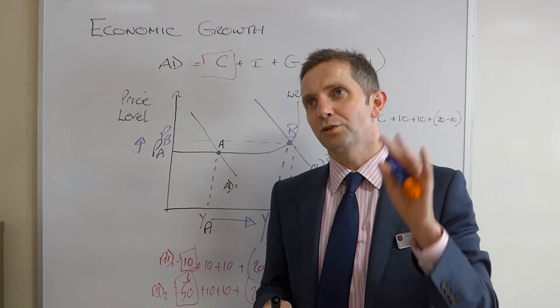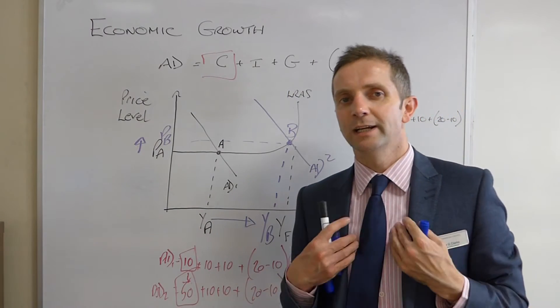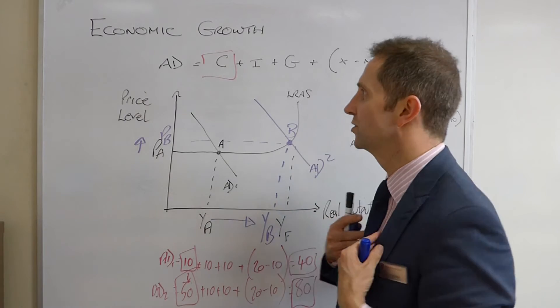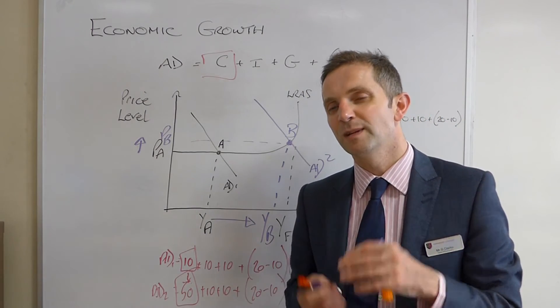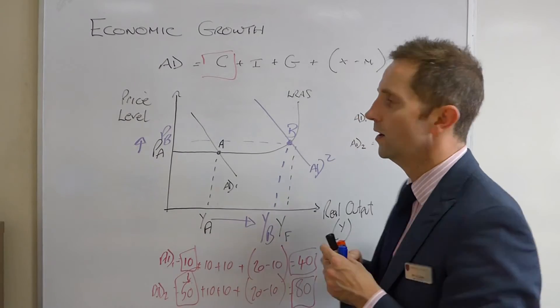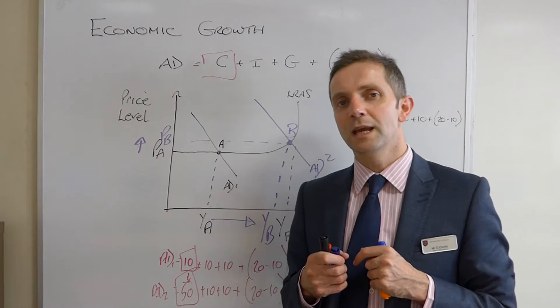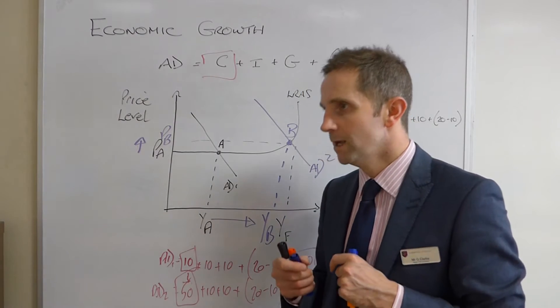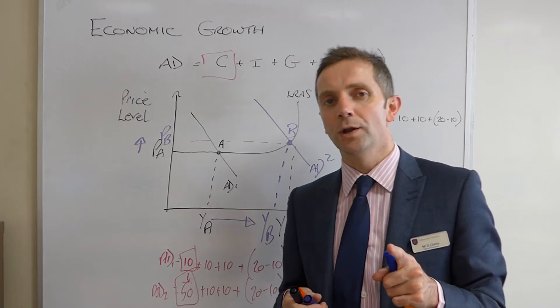So, consumption, expenditure by firms on consumer goods and services in order to bring the consumer a certain amount of satisfaction. So, let's think about some things the government could do to maybe stimulate consumption. Well, number one, the government or the Bank of England, they could make borrowing cheaper. In other words, they could lower the interest rate.